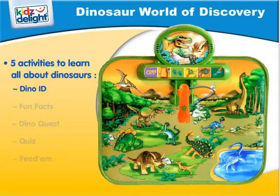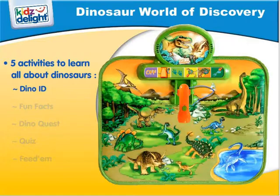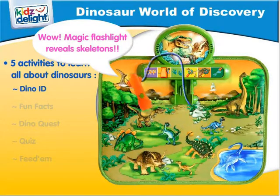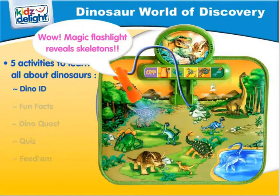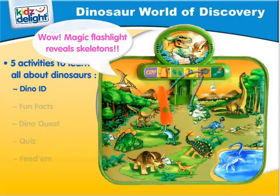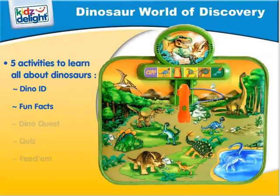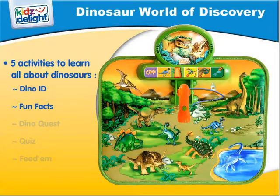Press on a dinosaur. The Tyrannosaurus Rex. Press on a dinosaur. The Oviraptor looks like a parrot. It eats eggs.